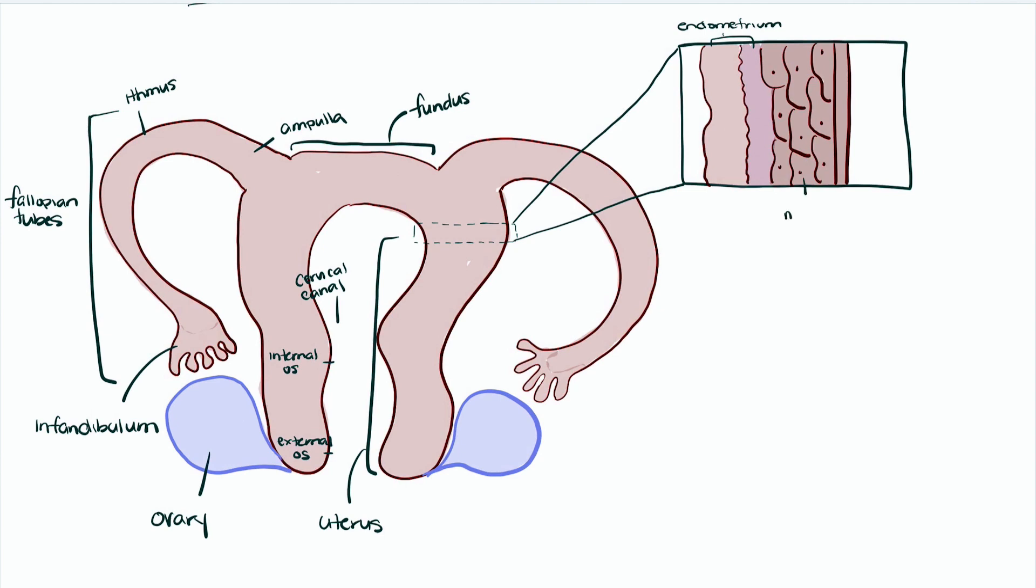The middle layer of muscle tissue is the myometrium and this is going to play a large role in muscle contraction which allows for birthing of the fetus. Finally we have the parametrium which is the outermost layer. So those are three layers.